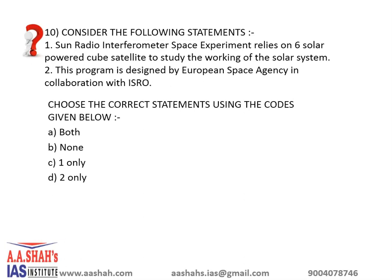Consider the following statements. First: the Sun Radio Interferometer Space Experiment relies on 6 powered CubeSats to study the working of solar systems. Second: this program was designed by the European Space Agency in collaboration with ISRO. The correct answer is C: 1 only. The second statement is incorrect because this program is designed by NASA. It will basically study how the Sun generates and releases giant space weather storms — also known as solar particle storms — into the planetary system, providing better information to astronauts travelling to the Moon and Mars about how the Sun's radiation affects the space environment.